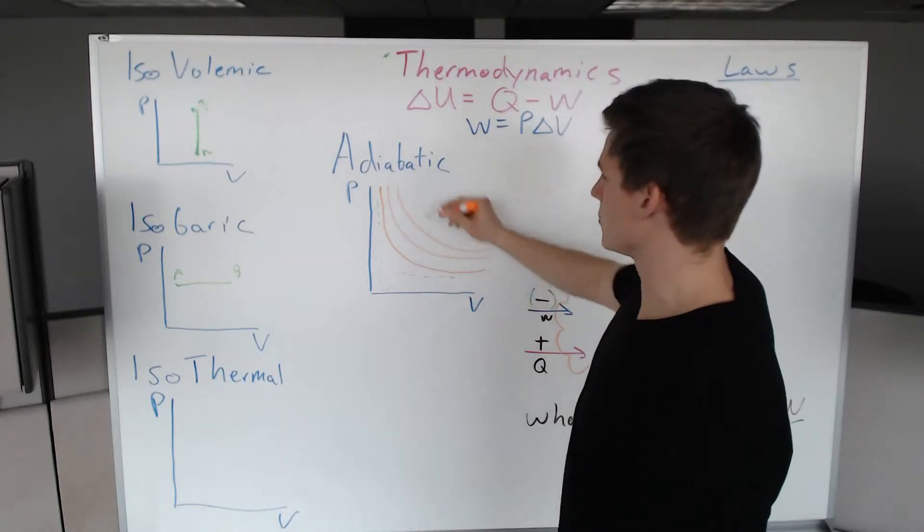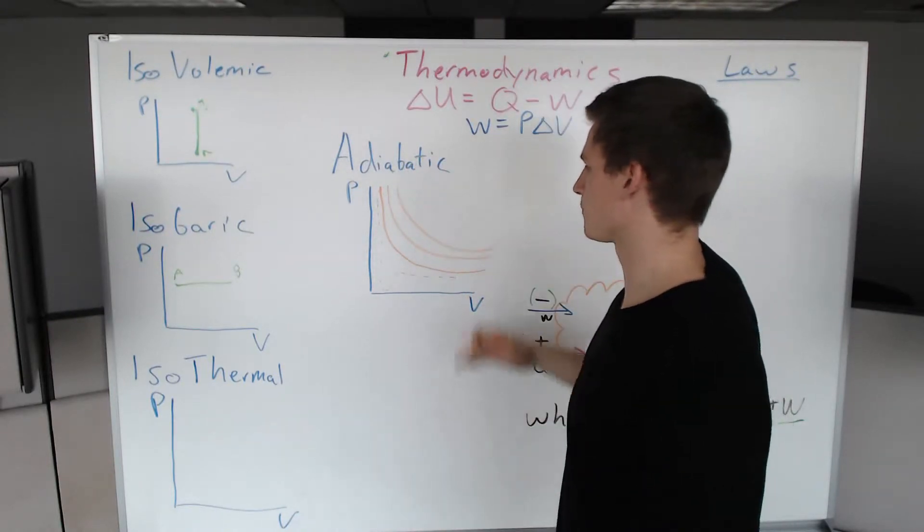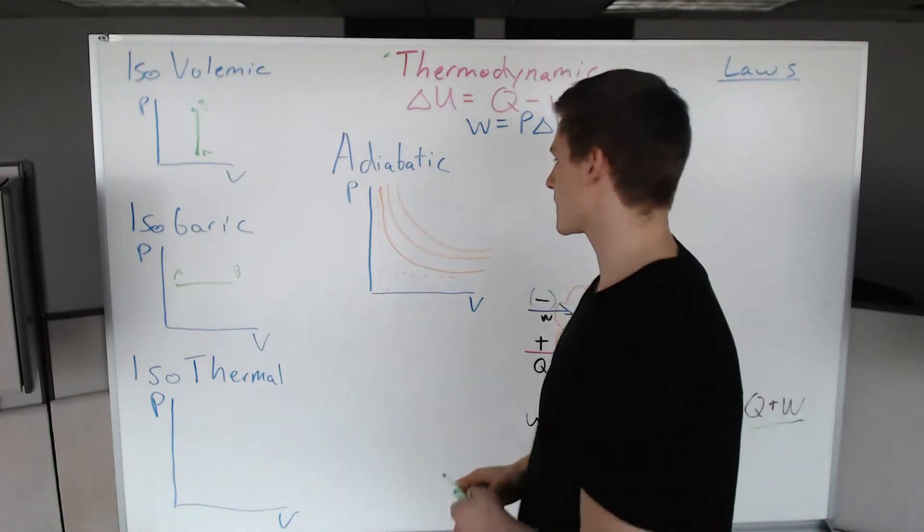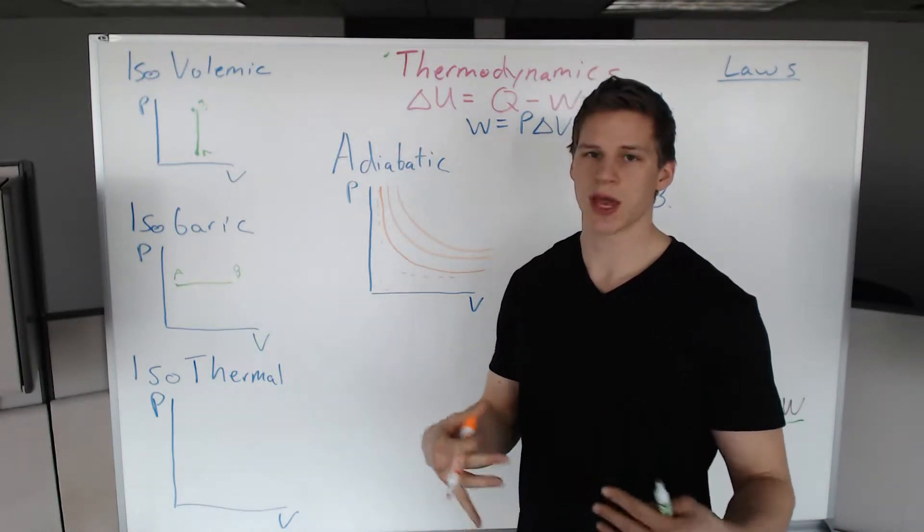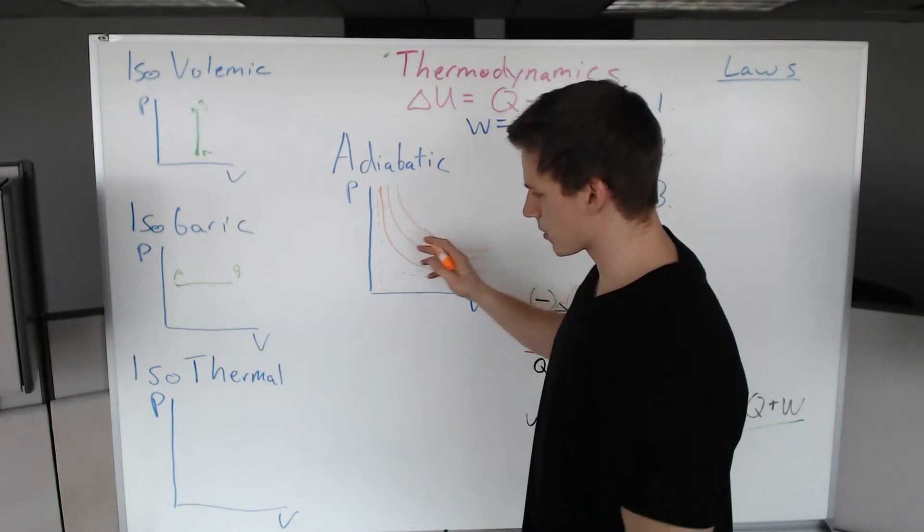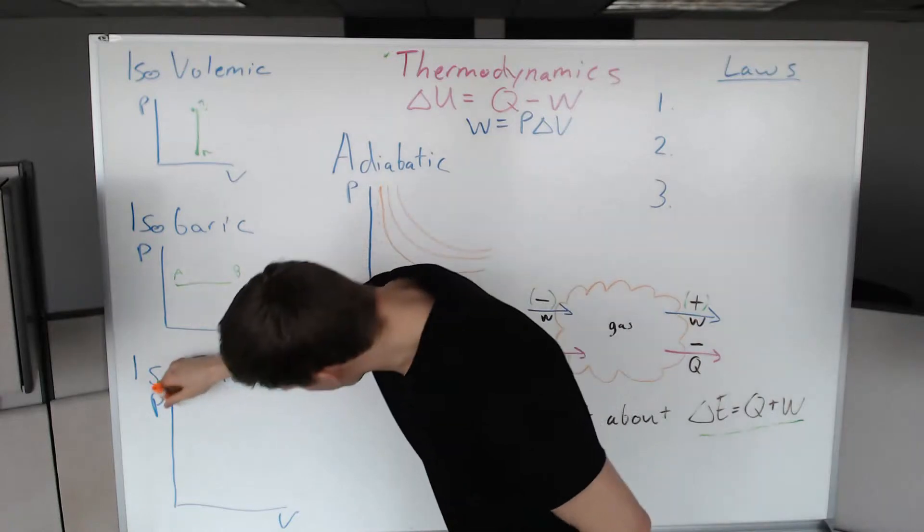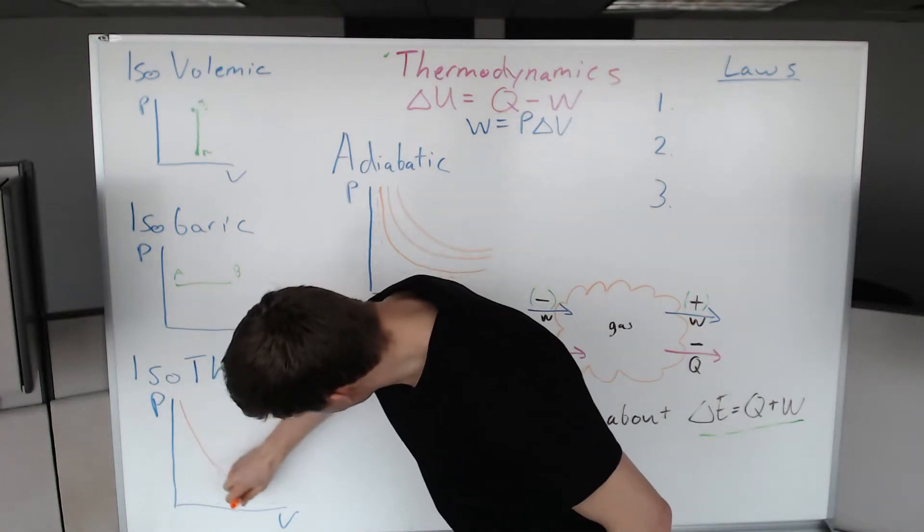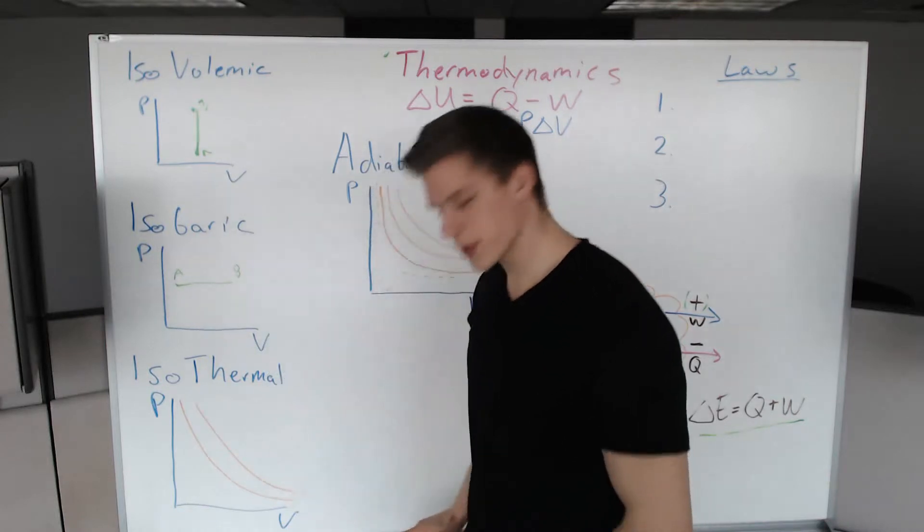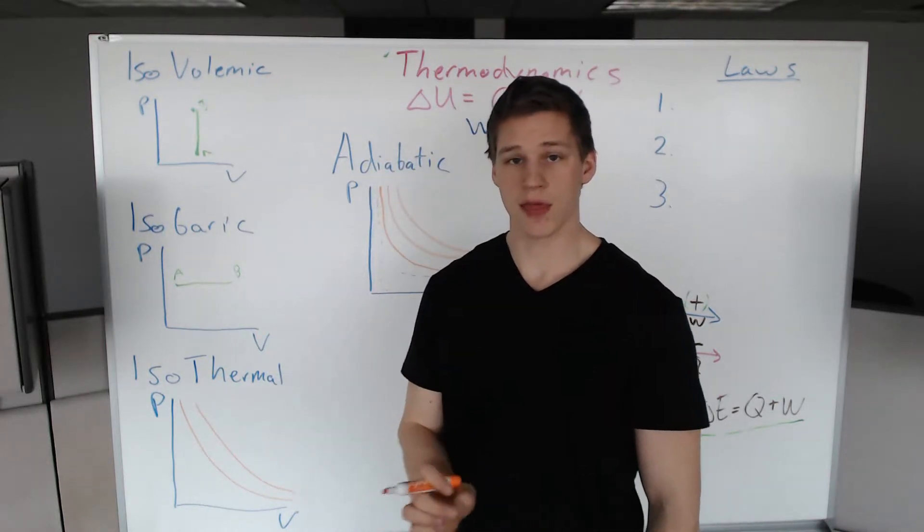The further out you go, the more ideal gas it becomes. As you would expect, the temperature increase causes the gas to behave more ideal. So those are the temperature lines.